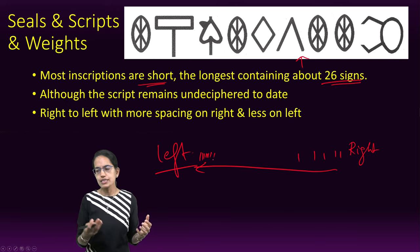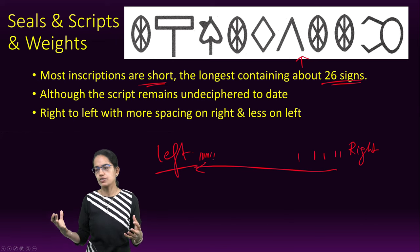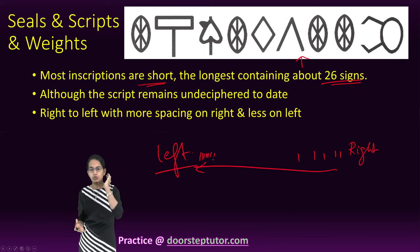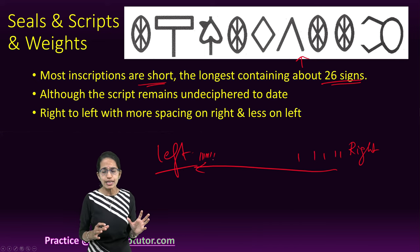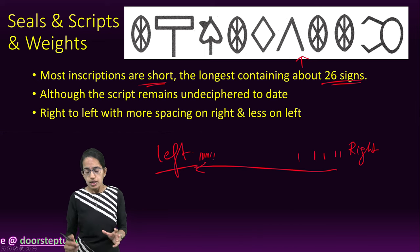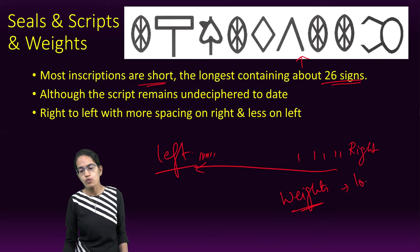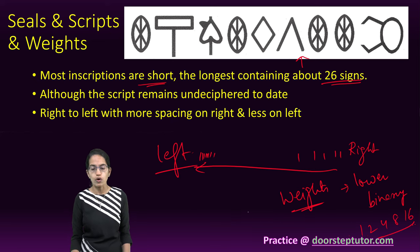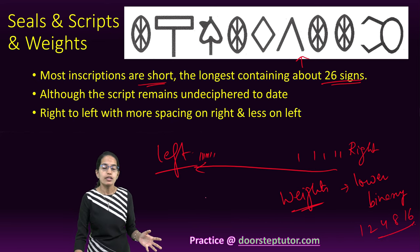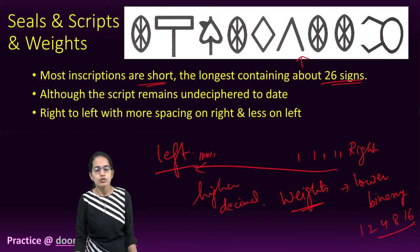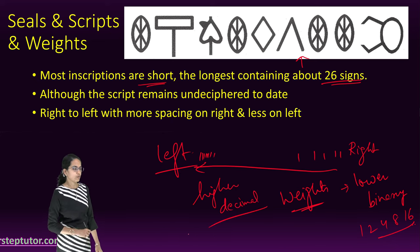Seals, rims of jars, and terracotta tablets were some of the important objects bearing inscriptions. The weight system was very unique: lower denomination weights were binary — 1, 2, 4, 8, 16, and so on — while higher denomination weights used a decimal system. So both binary and decimal systems were known to the Harappans.